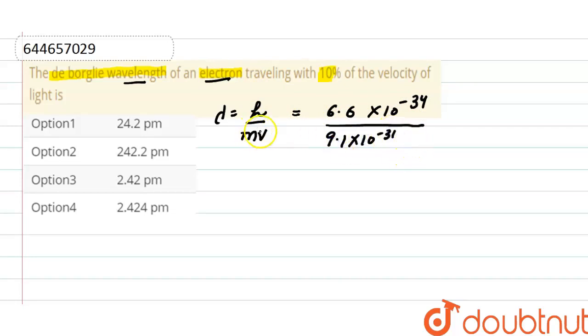And here velocity of electron is given, that is 10 percent of velocity of light, that is 3 × 10^8, or we can write it as 10 divided by 100 into 3 × 10^8. So from here velocity is 3 × 10^7 meter per second. Putting the value here...